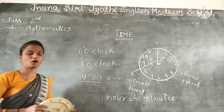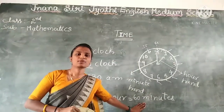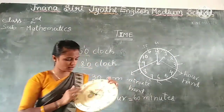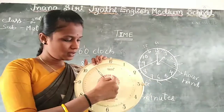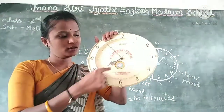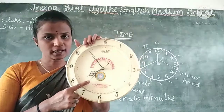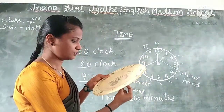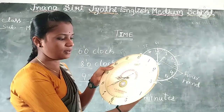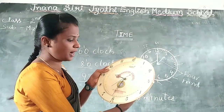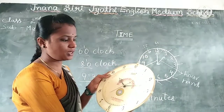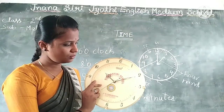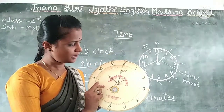For one minute, 60 seconds are there. See this — this is called the second hand. If the second hand revolves once, the short hand and long hand change position.